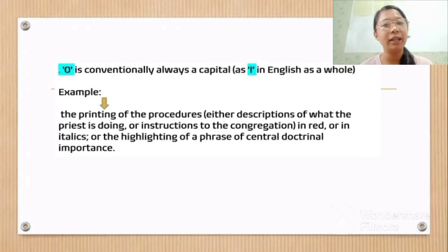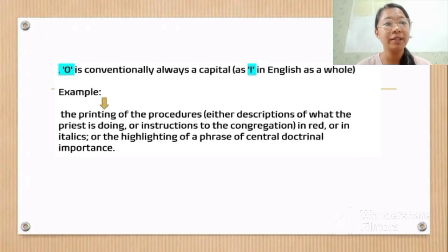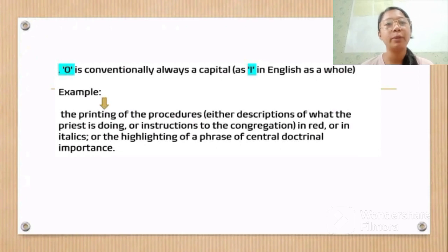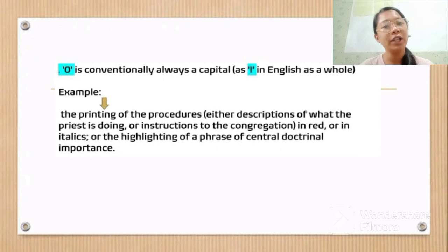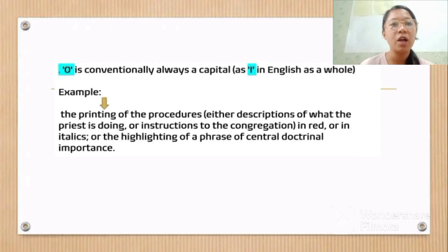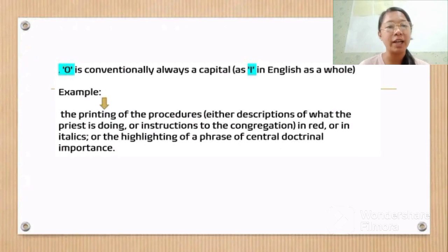Finally, any utterance which needs to stand out from the rest of the text is given a distinct typographical identity — for example, the printing of the rubrics, descriptions of what the priest is doing, or instructions to the congregation, in red or in italics, or the highlighting of phrases of central doctrinal importance.